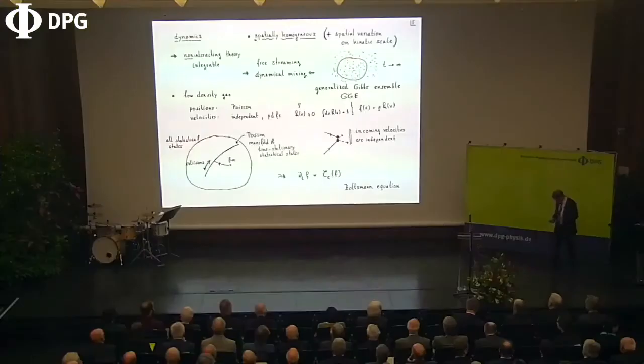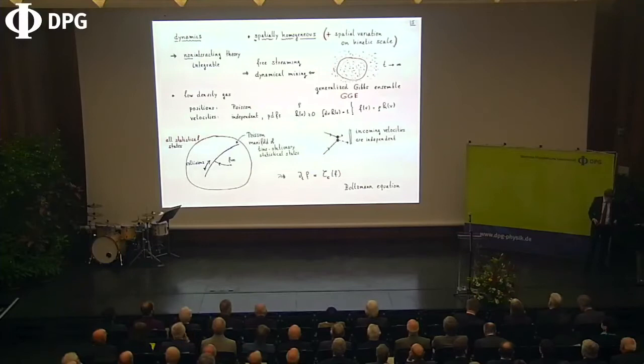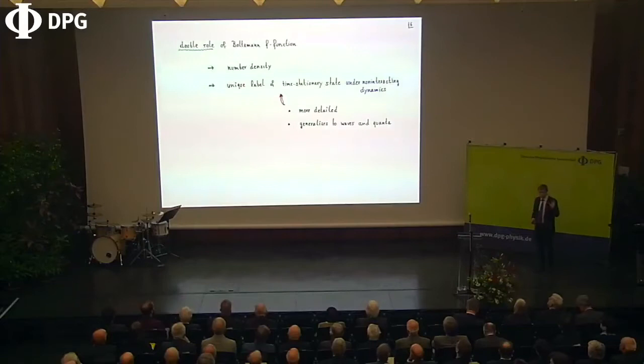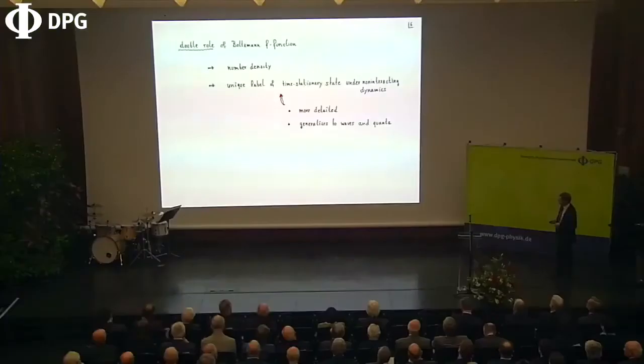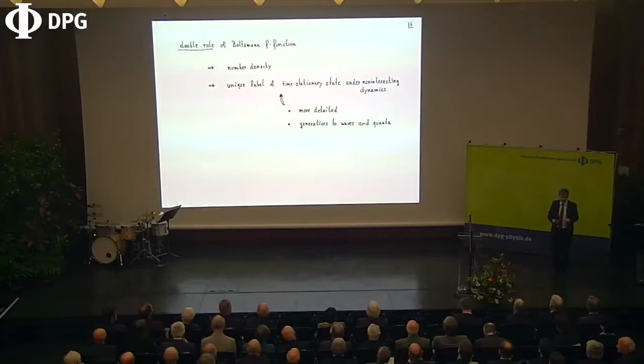That precise equation governing motion on the manifold is nothing else but the spatially homogeneous Boltzmann equation. There is a double role of the Boltzmann F function: one is counting — the number density in a little kinetic-scale region — which is a macroscopic quantity. On the other side, the Boltzmann F function tells you the statistical state of the system. It is a unique label of the stationary states under the non-interacting dynamics.